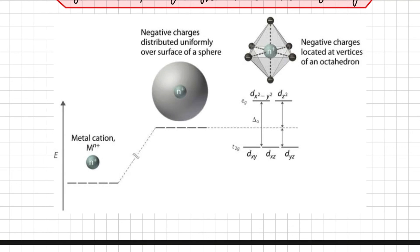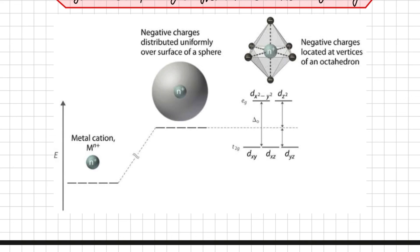The dx²-y² and dz² orbitals are represented by the label eg, while the dxy, dyz, and dxz orbitals are represented by t2g — these are group theoretical terms derived from the shapes of the orbitals. The key parameter here is Δo, called the crystal field splitting parameter for octahedral geometry, where 'o' stands for octahedral. How this splitting is responsible for the stability of coordination complexes will be explained in the next lecture.